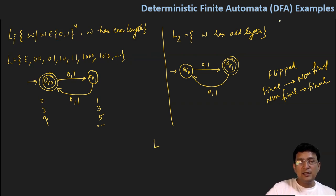If we establish a relation between L2 and L1, L2 is the complement of language L1. If L2 is the language where we are talking about even-length strings over {0,1}, then all the remaining strings will be of odd length. Therefore, L1 is the complement of L2 language.